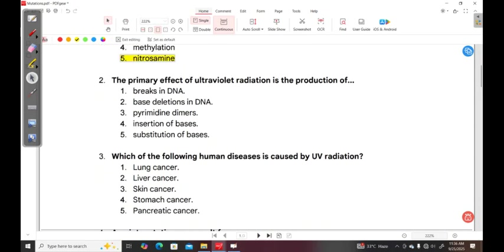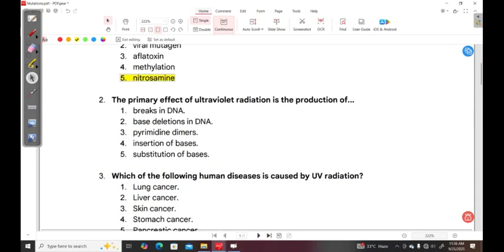Question two: The primary effect of ultraviolet radiation is the production of - 1. breaks in DNA, 2. base deletions in DNA, 3. pyrimidine dimers, 4. insertion of bases, 5. substitution of bases.